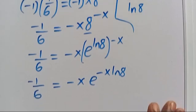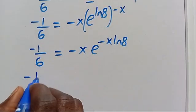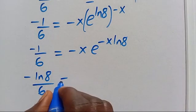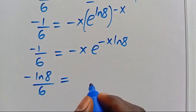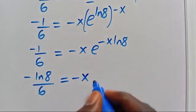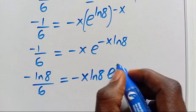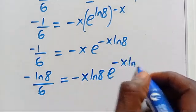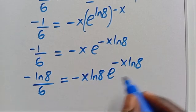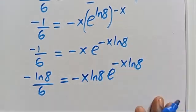When we multiply through by ln(8), here we have minus ln(8) divided by 6 equals minus x times ln(8) times e to the power of minus x times ln(8). You can see that the base and the power are the same, and there is a negative on both sides.